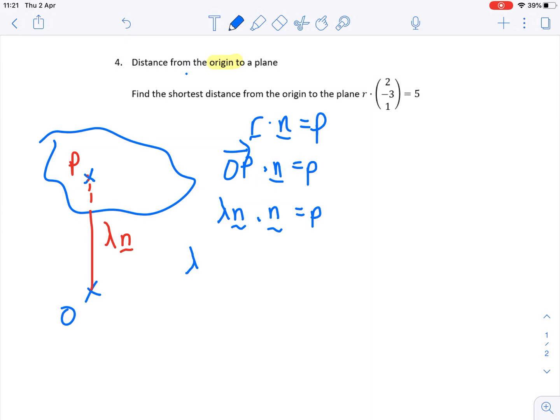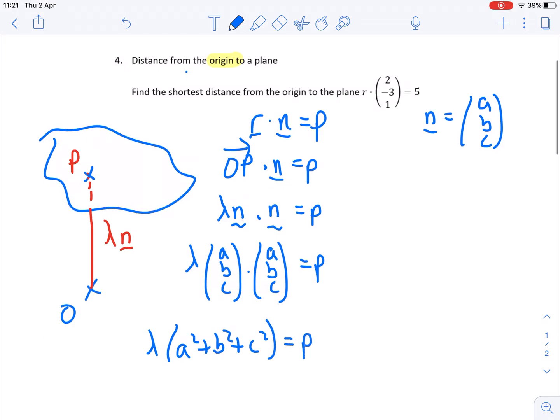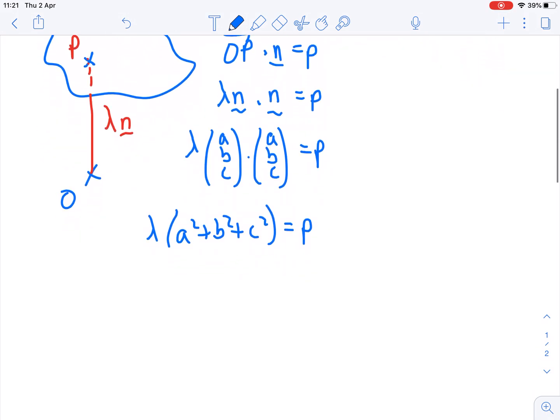So let's take it in its three dimensions, and we'll call the vector N, let's just generalize it to ABC. So we have lambda lots of some unknown vector ABC dotted with ABC has to give me a scalar product P. So lambda lots of A squared plus B squared plus C squared gives me a scalar product P. And therefore lambda, the multiple here, is P over A squared plus B squared plus C squared.